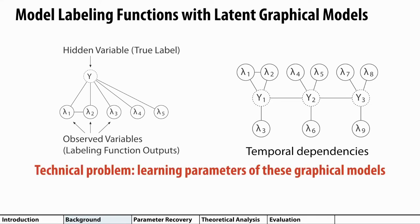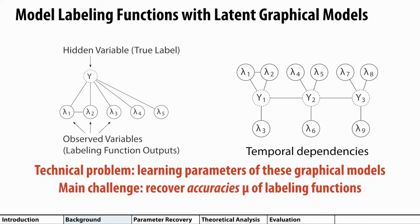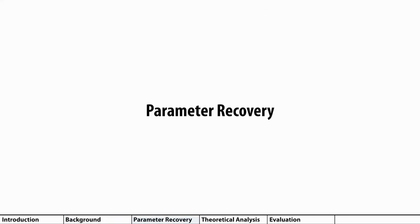The technical problem then becomes learning the parameters of these graphical models, essentially the weights of the edges in these graphs. With a little bit of work, we can see that the main challenge in particular is estimating the accuracies of the labeling functions. We'll call these accuracy parameters mu. As a side note, for this presentation, we'll assume that the model structure is user provided, but we know that there are methods of estimating the structure directly from labeling function outputs as well.